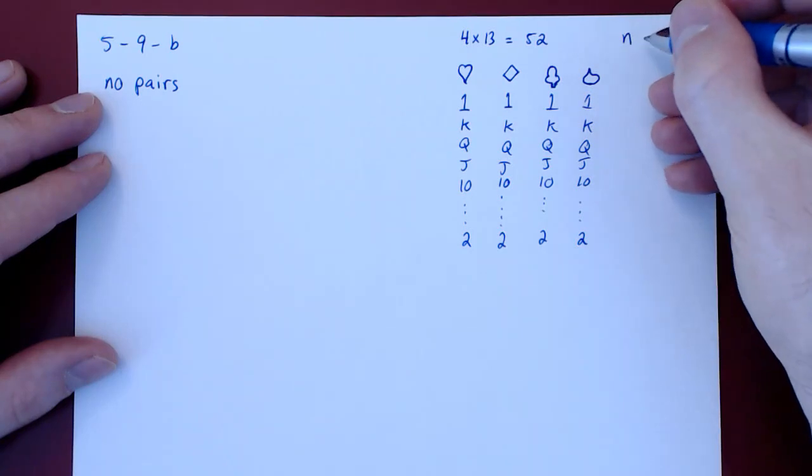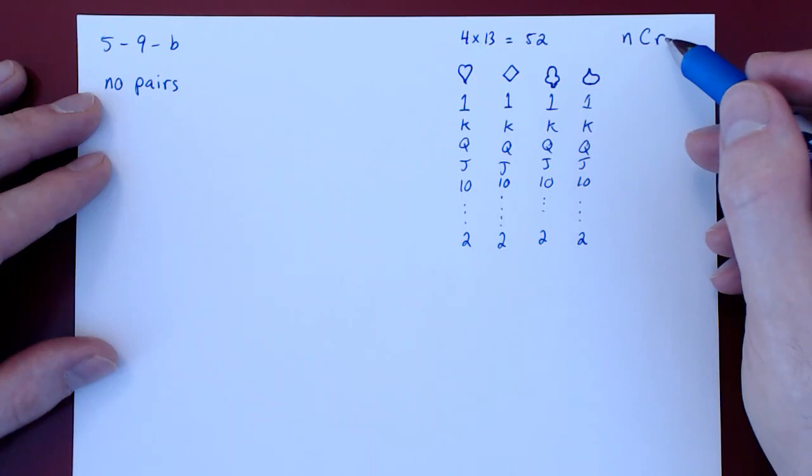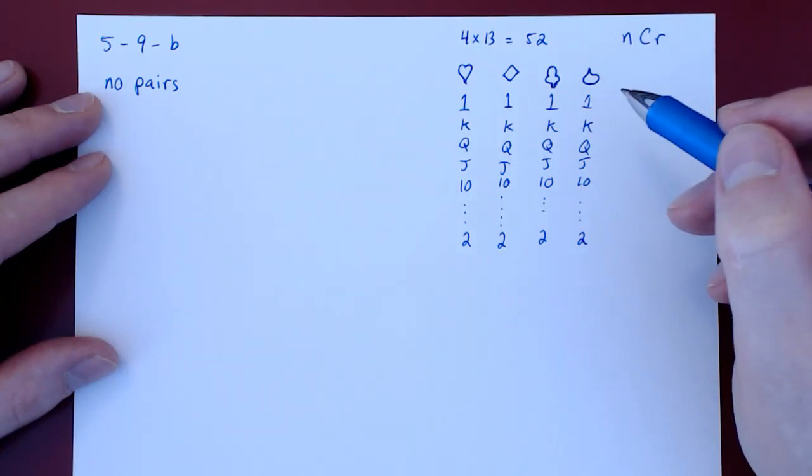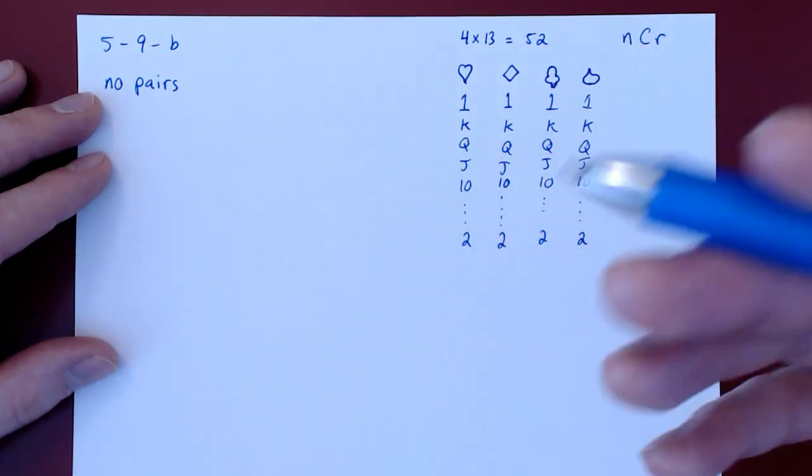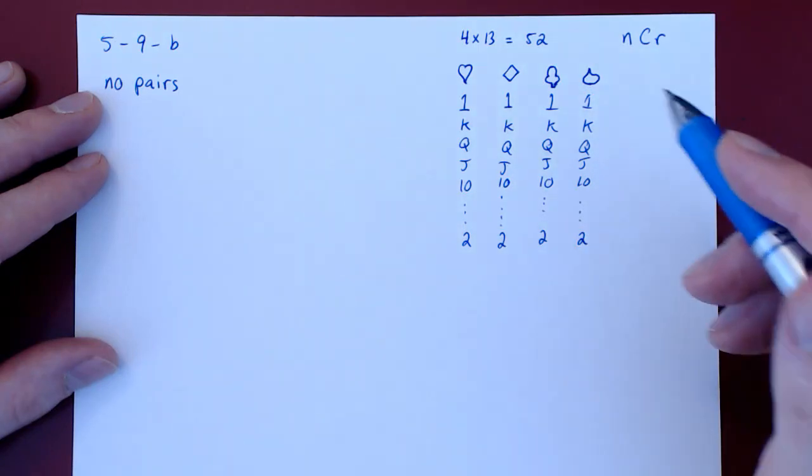In general, n choose r is the total number of ways of selecting r elements from a set of n possible elements when the selection is done unordered without replacement.